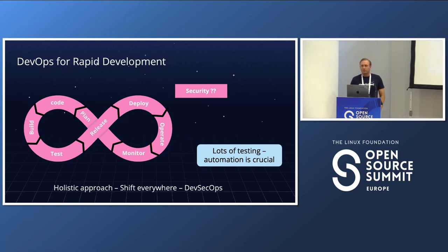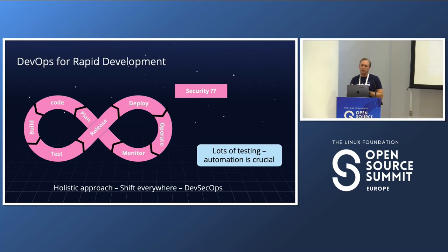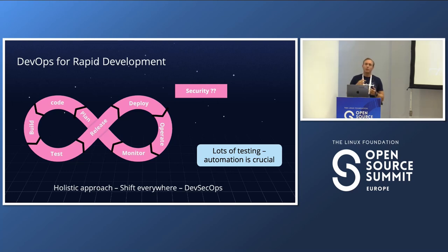What we're trying to do today — a more representative picture — is DevOps or DevSecOps with rapid development. We do similar things as in the waterfall model but much more rapidly and in shorter cycles: plan, code, build, test, release, deploy, operate, monitor, and repeat as quickly as possible.